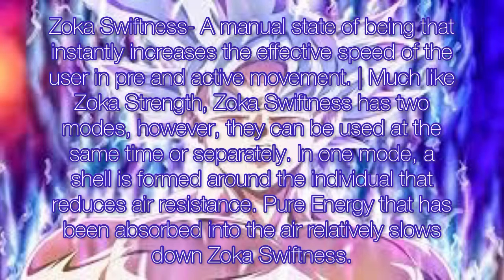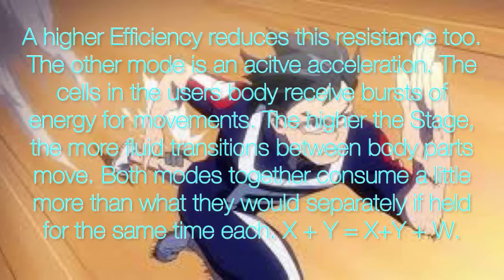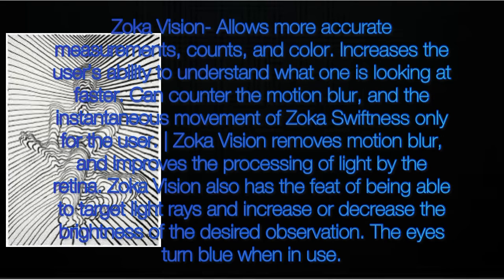Zoka swiftness is a manual state of being that instantly increases the effective speed of the user in pre and active movement. Much like zoka strength, zoka swiftness has two modes, however they can be used at the same time or separately. In one mode, a shell is formed around the individual that reduces air resistance; pure energy absorbed into the air relatively slows down zoka swiftness, though a higher efficiency reduces this resistance. The other mode is an active acceleration where the cells in the user's body receive bursts of energy for movement; the higher the stage, the more fluid transitions between body parts. Both modes together consume a little more than they would separately if held for the same time.